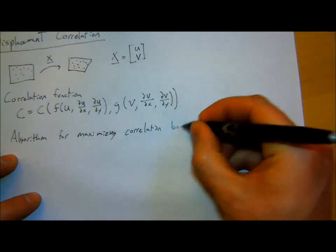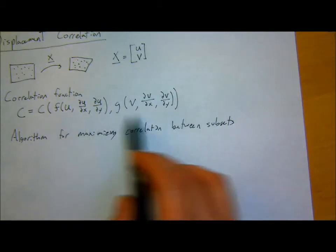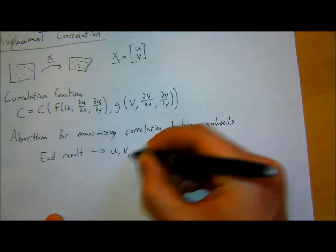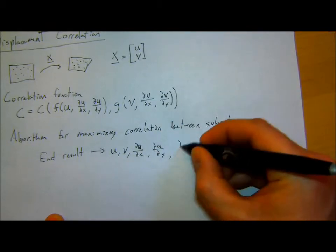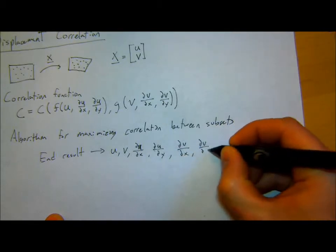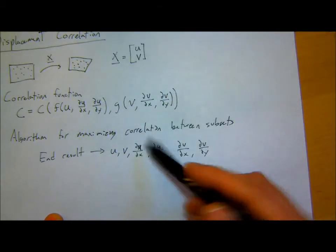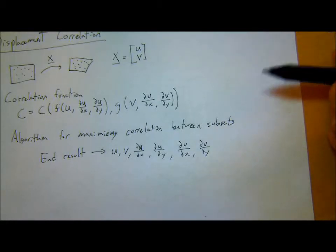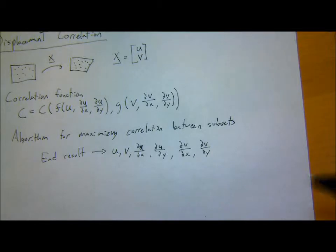The result is it spits out U, V, du/dx, du/dy, dv/dx, and dv/dy. So for each subset it outputs the U and V and their gradients. Depending on exactly what DIC software you're using and what algorithms they implement, you can start with the same video data and get drastically different results depending on how they implement this correlation.